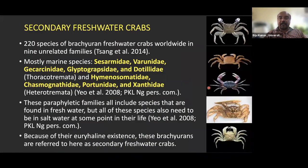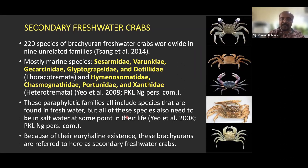Secondary freshwater crabs are euryhaline — they spend part of their life cycle in brackish or salt water. These include mainly marine species from families Sesarmidae, Varunidae, Gecarcinucidae, Grapsidae, and Dotillidae, as well as Hymenosomatidae, Chasmagnathidae, Posturidae, and Xanthidae, which are represented in brackish water systems.